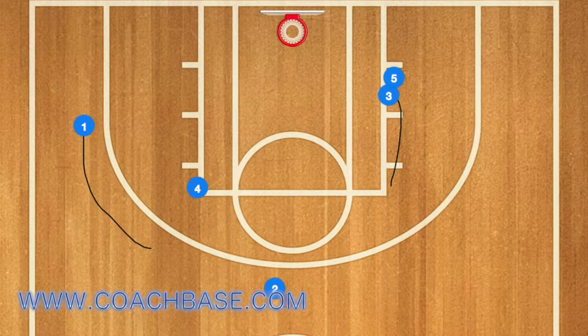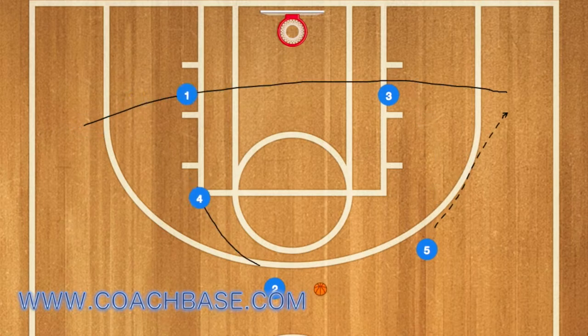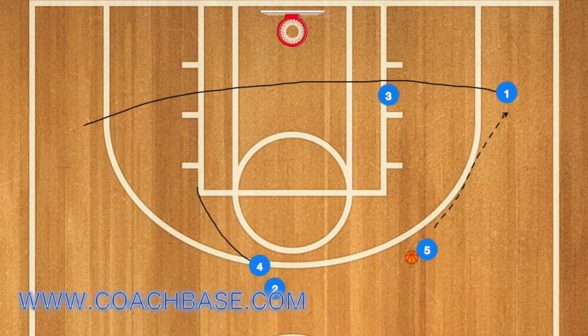5 will then pop out to the 3-point line, and player 2 will pass 5 the basketball, while 4 screens for player 2, and 1 cuts across the key and uses 3 as a screen and pops out to the right wing.